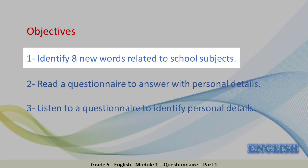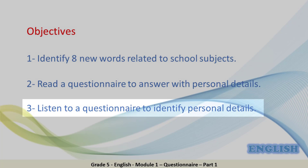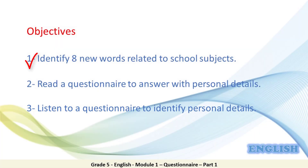Let's read our objectives. First, identify 8 new words related to school subjects. Second, read a questionnaire to answer with personal details. Third, listen to a questionnaire to identify personal details. Now let's get started with the first objective: the vocabulary.